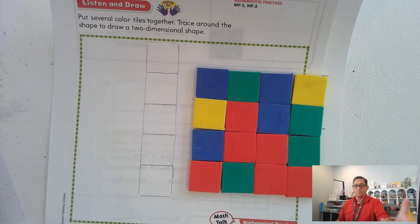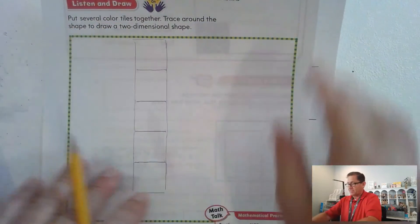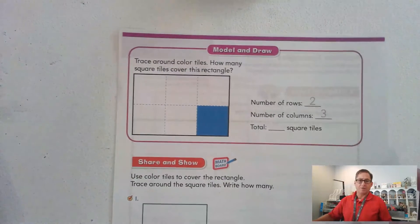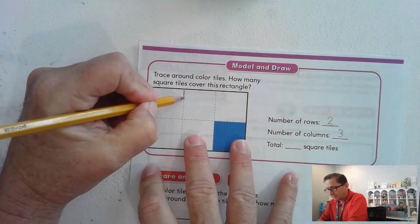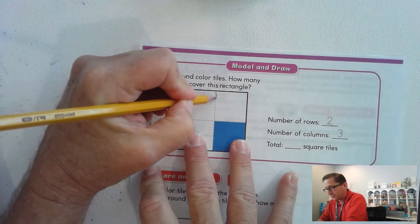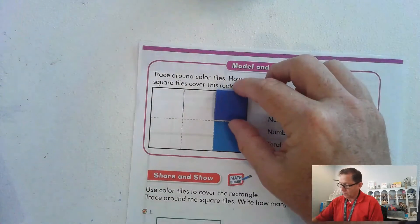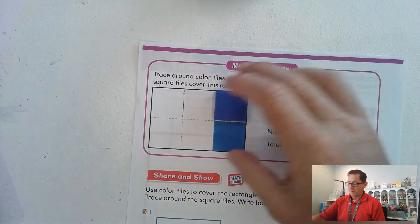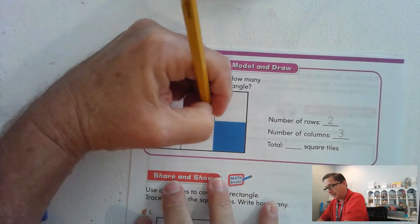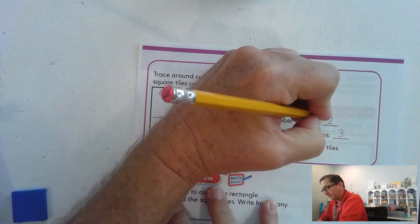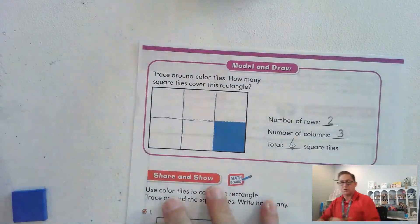So were you able to make a square based on the number of tiles you took out? Let's look at page 546. So trace around color tiles. How many square tiles cover this rectangle? So they've done that for us with the dashed lines. So if we put square tiles here, we'd see that we have one there, right? One there, and so on, right? So we have two rows of three for a total of six square tiles.